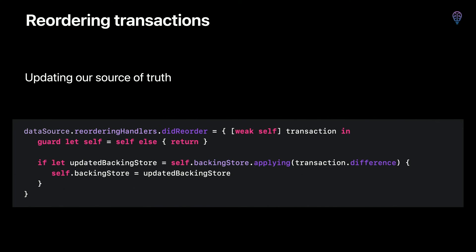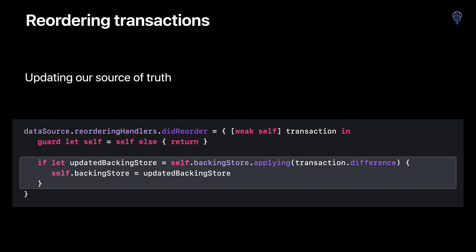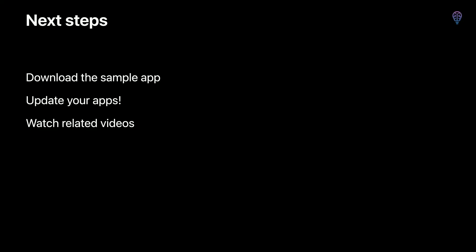Here's an example: our backing store is an array of items serving as the source of truth for a single-section collection view. Using the Swift standard library collection difference supplied with the transaction, we create a new backing store and update our source of truth directly. That wraps up our video covering all the advances brought to diffable data source for iOS 14. Download the sample app — it's full of examples of how to use these new APIs. Use this code as a starting point to update your apps, and watch the related videos mentioned throughout this talk to go deeper. Thanks for watching.